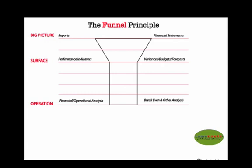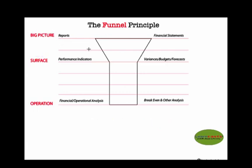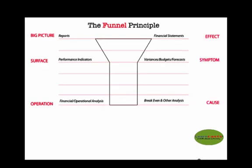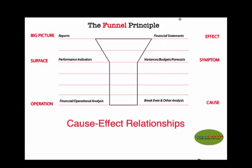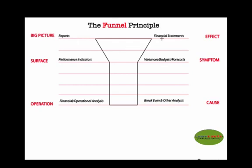So in a manner of speaking, during financial analysis using the funnel principle: the reports or financial statements represent the big-picture overview; as we go further down to the neck, we are looking at surface elements; and finally when you drill down to the bottom of the funnel, you are looking at the operation. The critical element of the funnel principle is brought out when we start assigning cause-effect relationships in what we are analyzing. The big-picture overview of the reports and financial statements at the top of the funnel actually represents the effect.